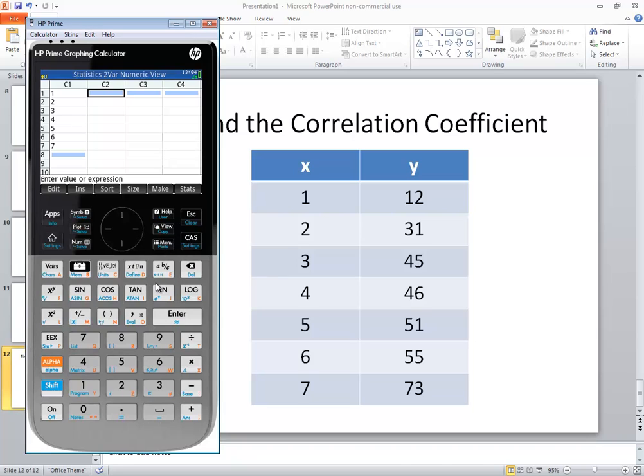Now put in my y values. So I got 12, 31, 45, 46, 51, 55, and 73.